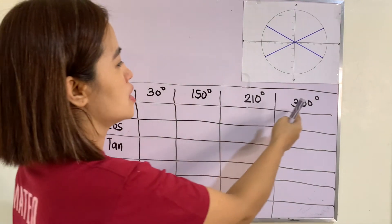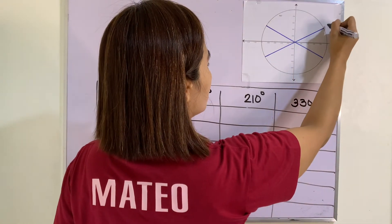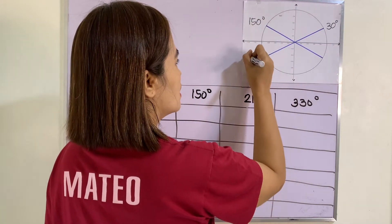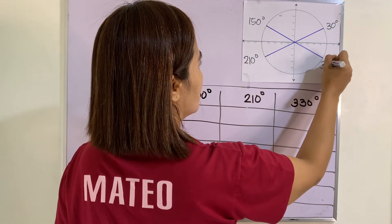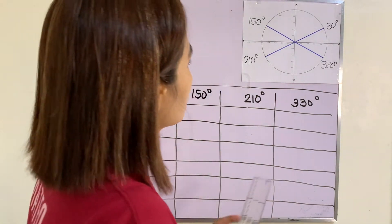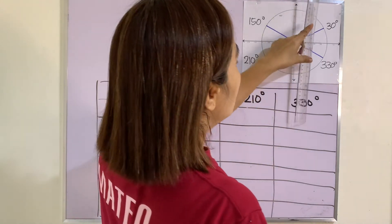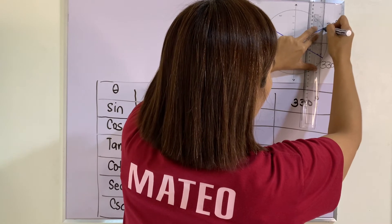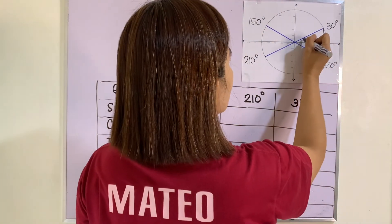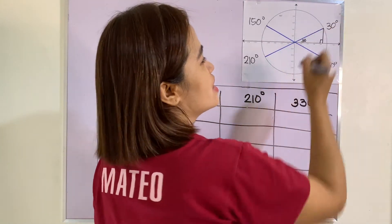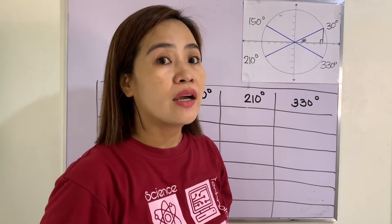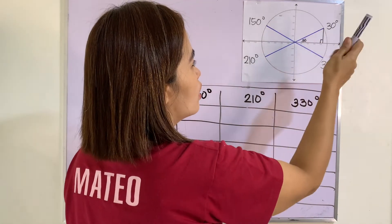Now let's get the values of other special angles in the unit circle — 30, 150, 210, and 330 degrees. For the 30 degree angle, you need to make a right triangle connecting to the x-axis. This gives us a 30-60 right triangle. We know that the radius is equivalent to one unit.